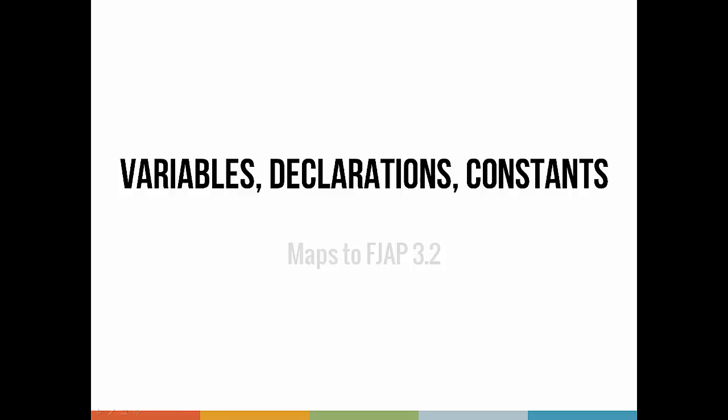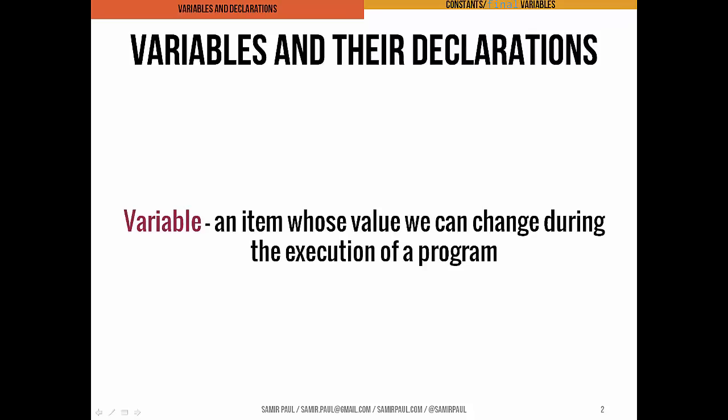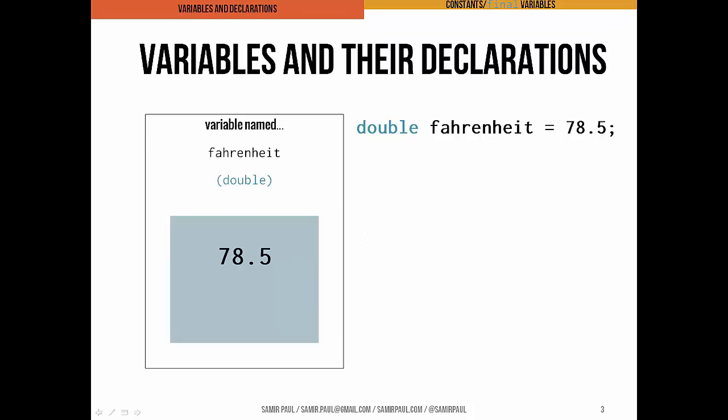In the last video we talked about literals, which are items in a program whose values don't change — things like the number 5, 9.0, a string literal, a character, or the boolean value true or false. Those don't change. But now we turn our attention to variables, which are basically the opposite. They're items whose values can, and most often do, change when we're running a program. You can really think of a variable as a little whiteboard that lives somewhere in the computer's memory, and when we decide we want to change that variable's value, we're essentially crossing out or erasing what's on that whiteboard and writing something new.